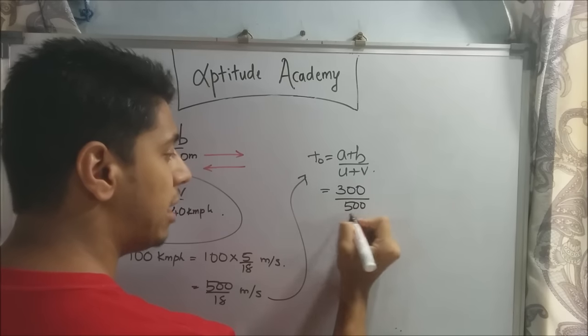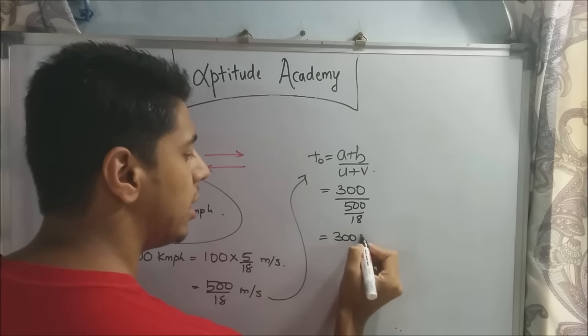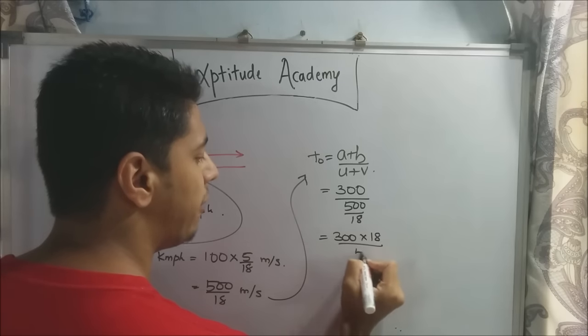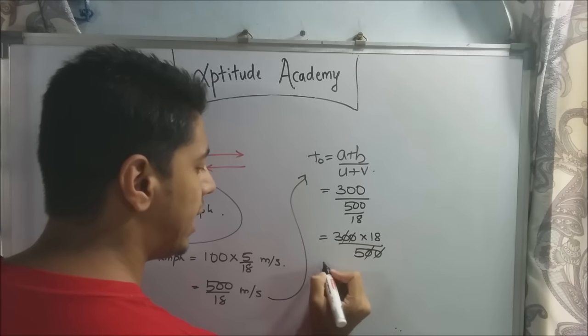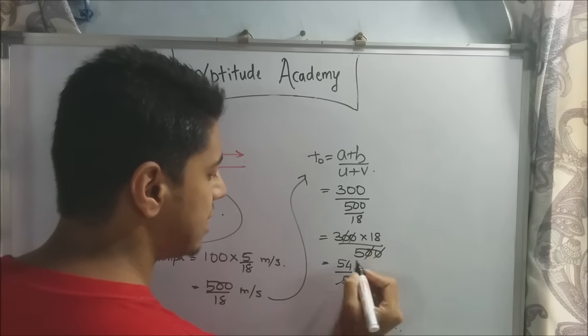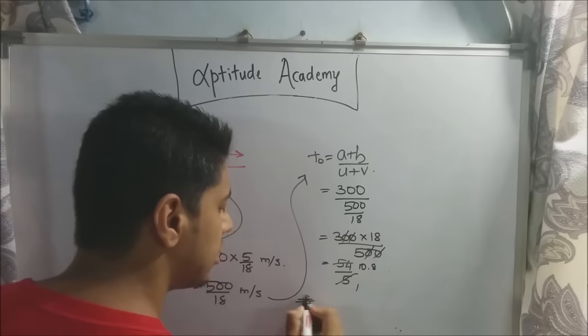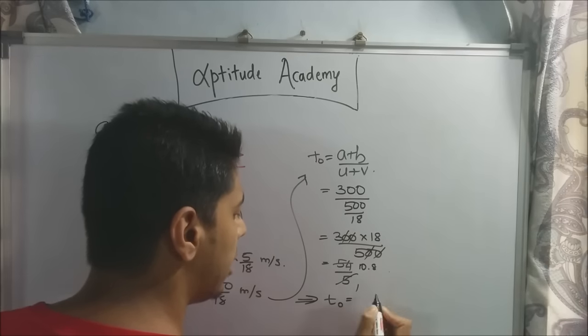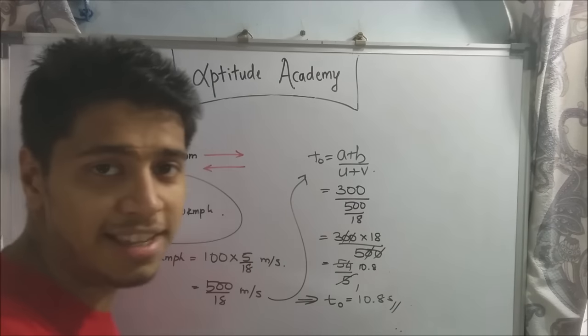So now 18 will take it on top. So it will be 300 into 18 divided by 500. So hundreds get cancelled out. So 3 into 18 is 54 divided by 5. So that's 10.8. So the time required to cross will be 10.8 seconds. Easy?